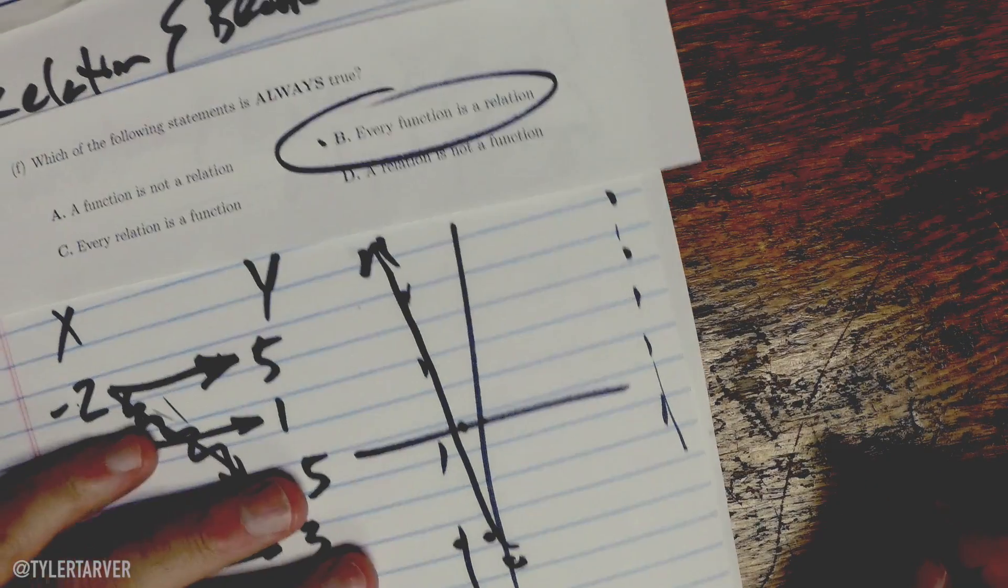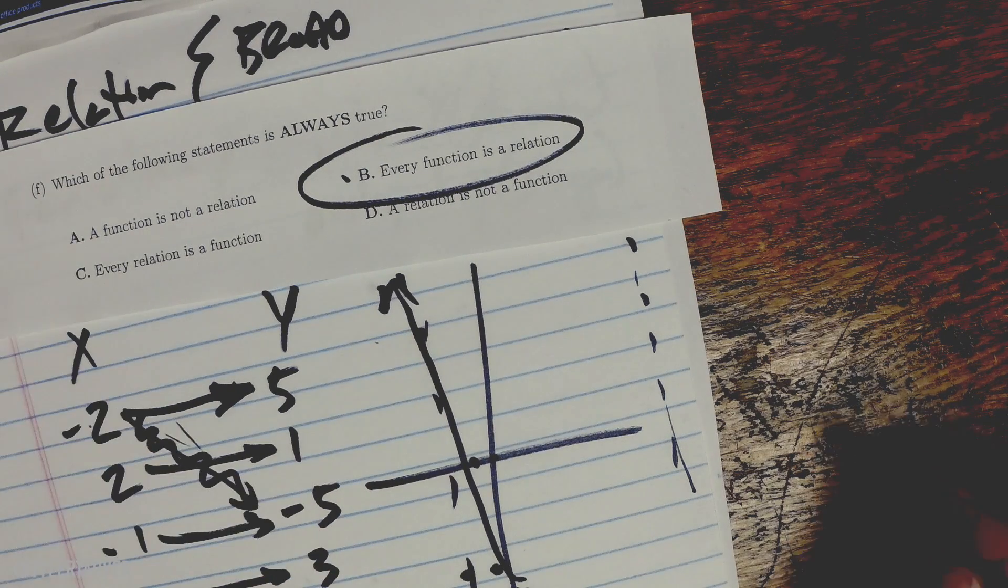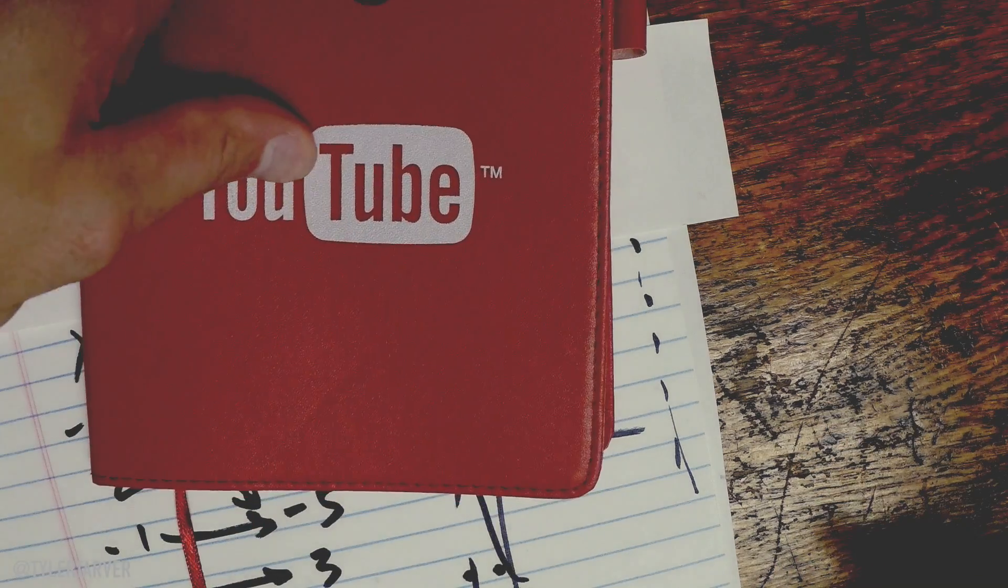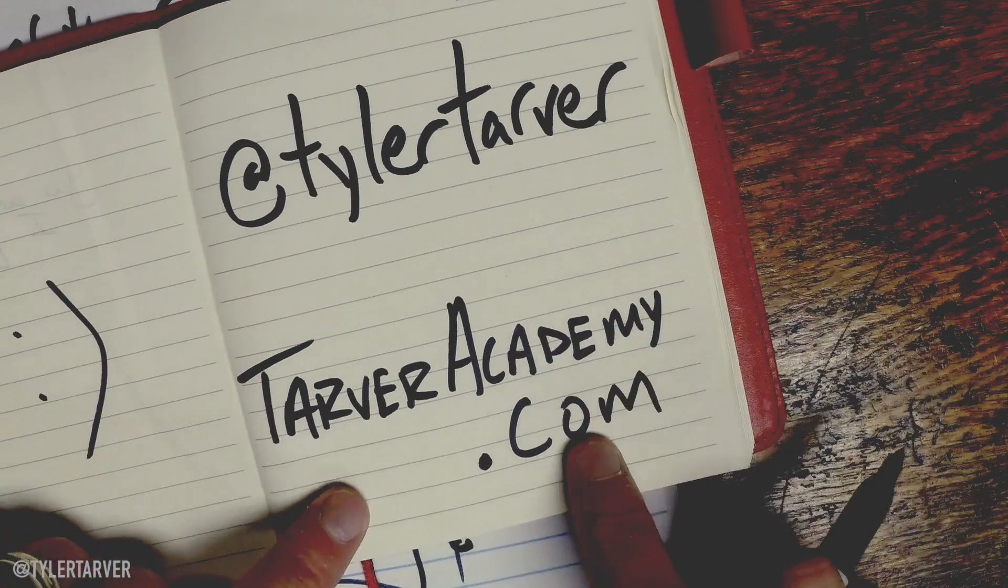So it'd be B. Every function is a relation. If you got that right, give yourself 30 points. I hope this helped. If you could, please check me out on social media at Tyler Tarver and tarveracademy.com for all your math needs. Toodles.